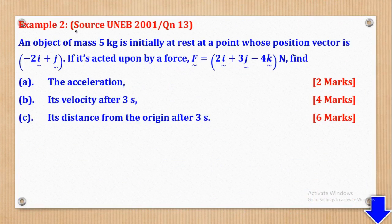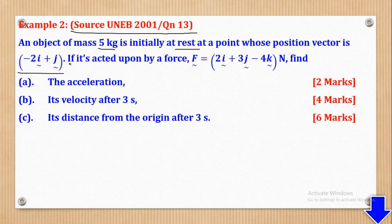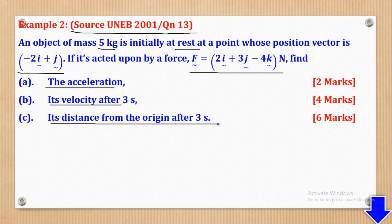We shall go to Example 2, which came from UNEB 2001, paper 2, question 13. It says: an object of mass 5 kilograms is initially at rest at a point whose position vector is −2i + j. If it is acted upon by a force of 2i + 3j − 4k newtons, find: part A — the acceleration; part B — its velocity after 3 seconds; and part C — its distance from the origin after 3 seconds.